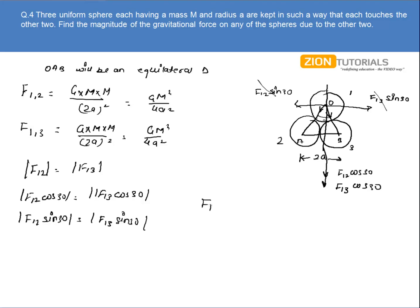So the net force acting on 1 due to 2 and 3 will be given by F12 cos of 30 plus F13 cos of 30.